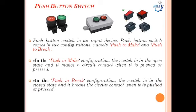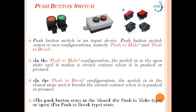The second configuration is push-to-break. Here the switch is in the closed state and breaks the circuit contact when pressed. A push-to-break switch does the opposite of push-to-make: when the button is not pressed, electricity can flow, but when pressed, the circuit is broken. Examples include fridge light switches and alarm switches.